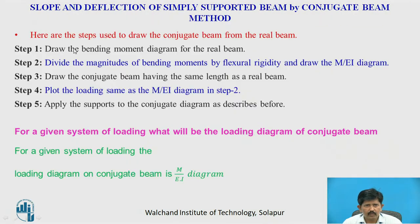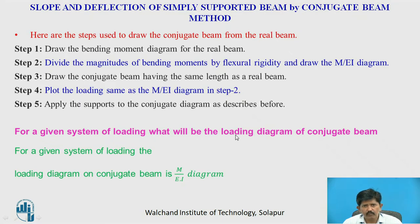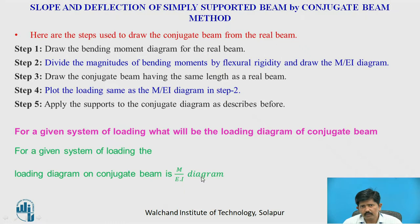To find out the slope and deflection by conjugate beam method, these are the steps to be followed. For a given system of loading, the loading diagram on the conjugate beam will be the M upon EI diagram.